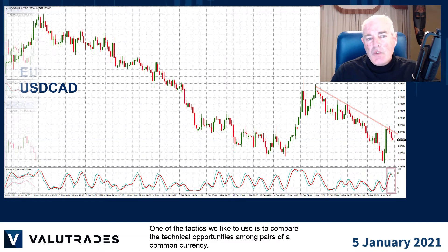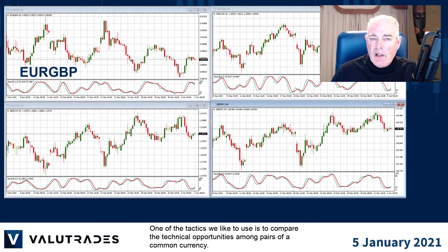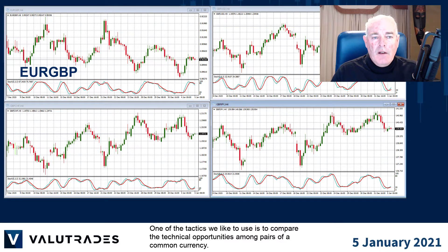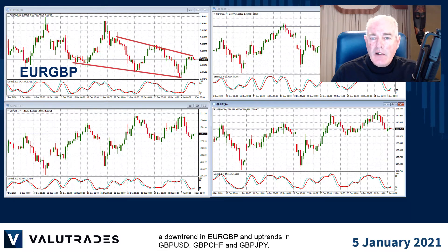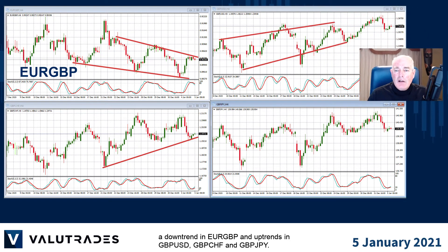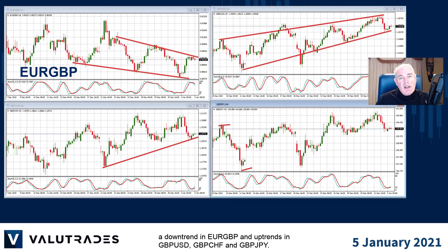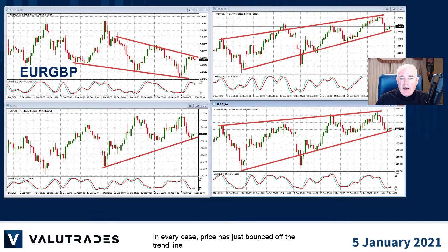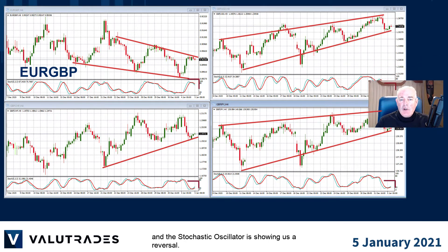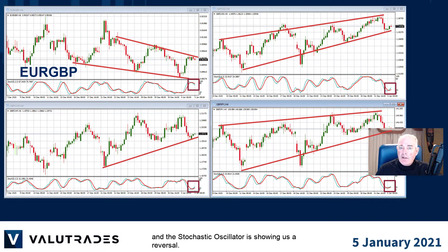One of the tactics we like to use is to compare the technical opportunities among pairs of a common currency. Here we have GBP showing strength in at least four pairs — a downtrend in EURGBP and uptrends in multiple GBP pairs. In every case, price has just bounced off the trend line and the stochastic oscillator is showing us a reversal.